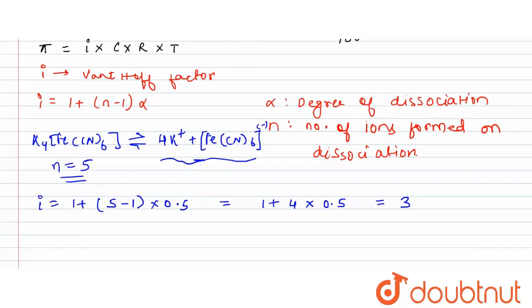Now let's see what is the value of osmotic pressure. The value of osmotic pressure is i times c times r times t. So what is the value of i? i is 3. What is the value of c? It is decimolar, which means 0.1 is the molarity.